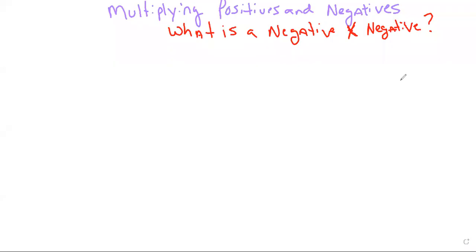You're probably wondering about multiplying positives and negatives. We often wonder about this because we ask the question: what is a negative times a negative, and why would it make any sense to get the answer that you get? What we're going to do is start with some pretty easy patterning, because that's the best way to do this.